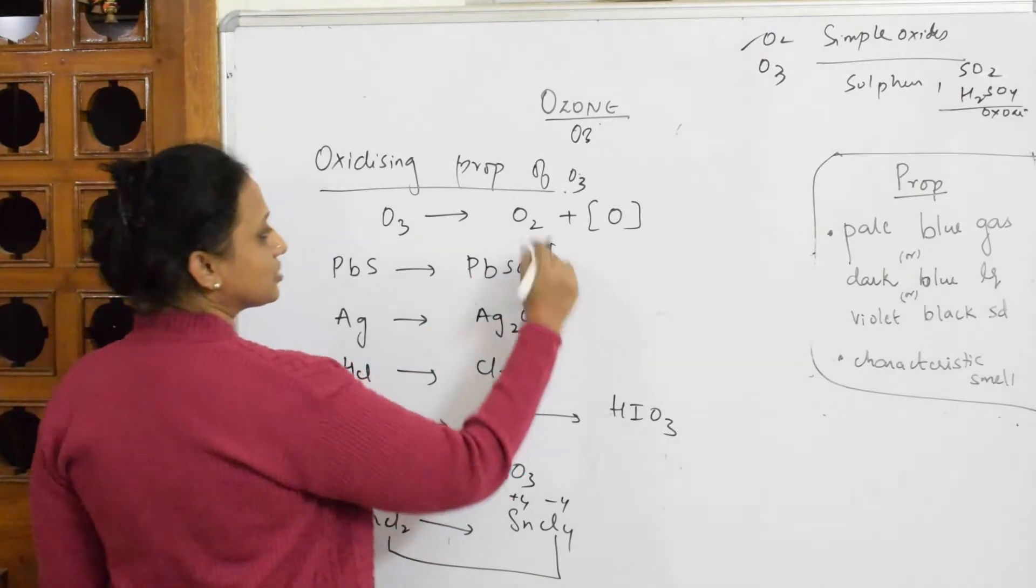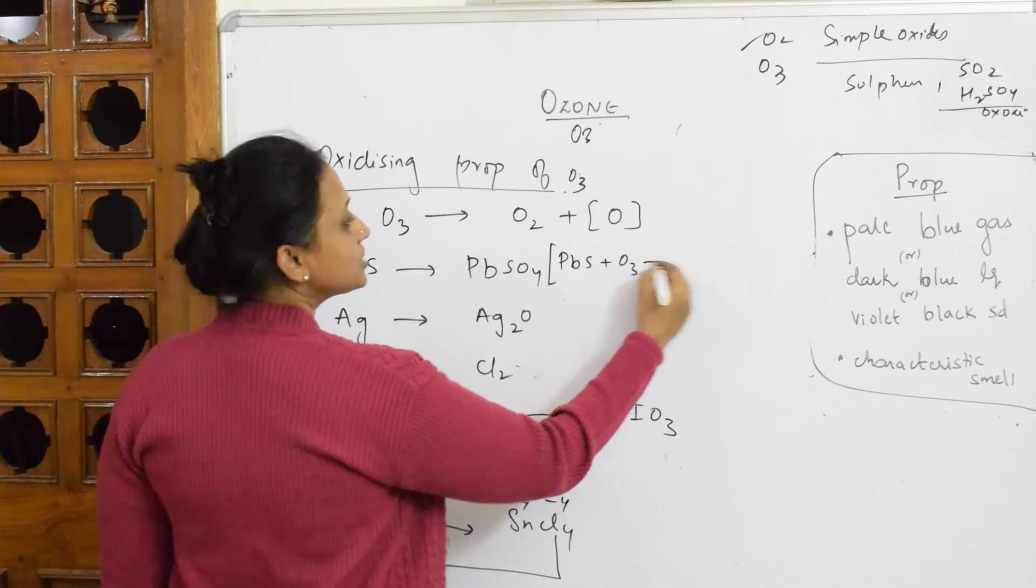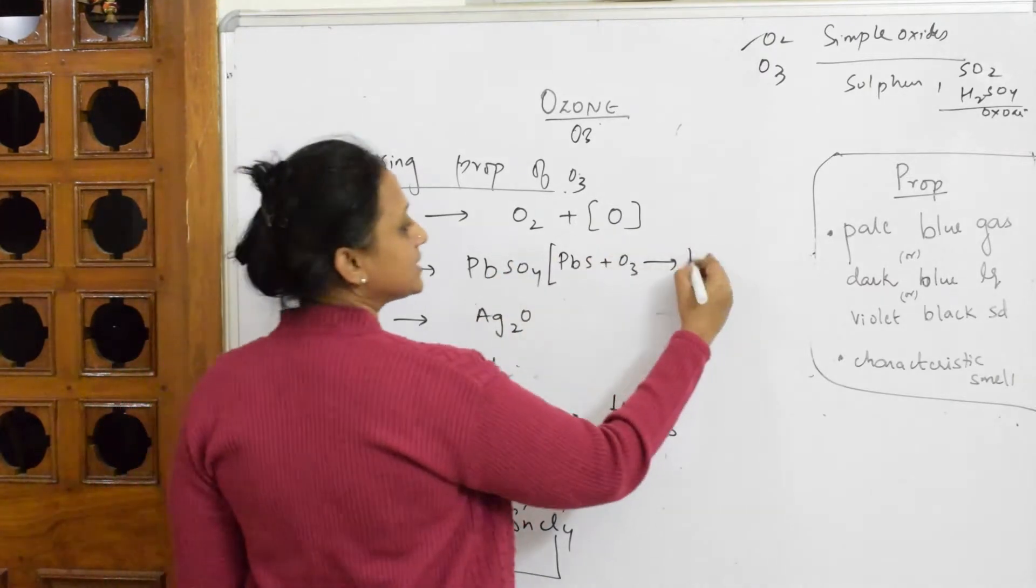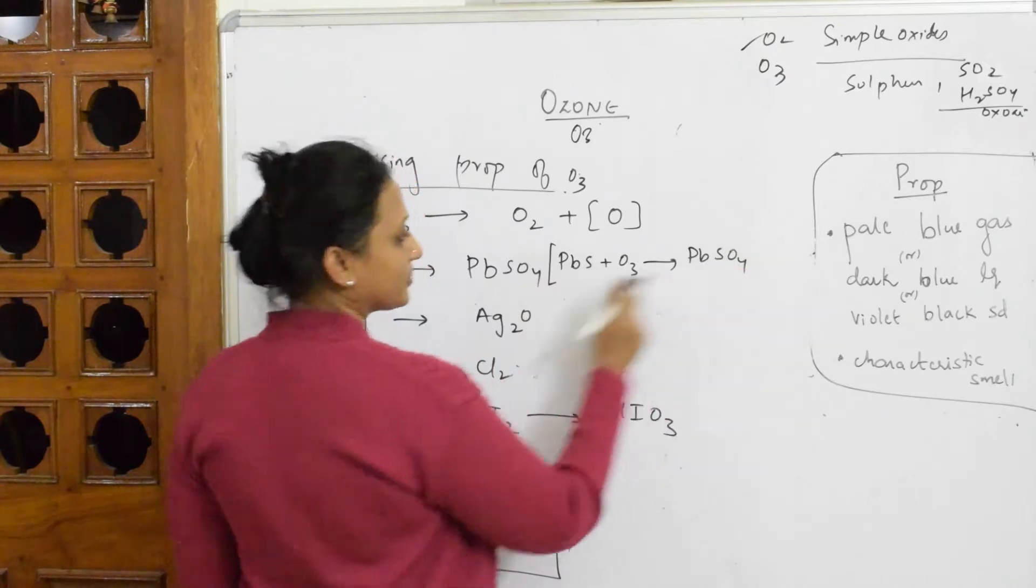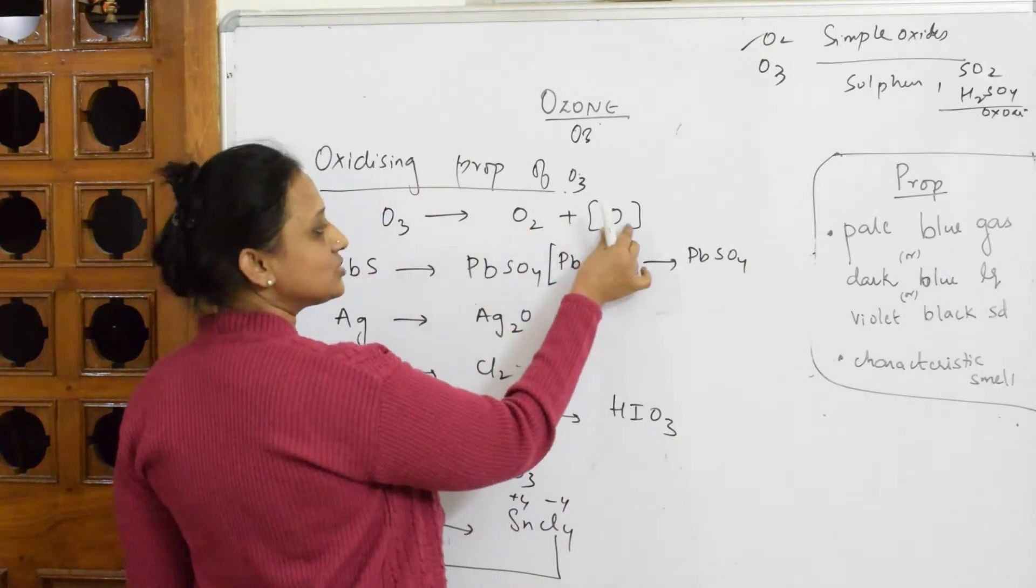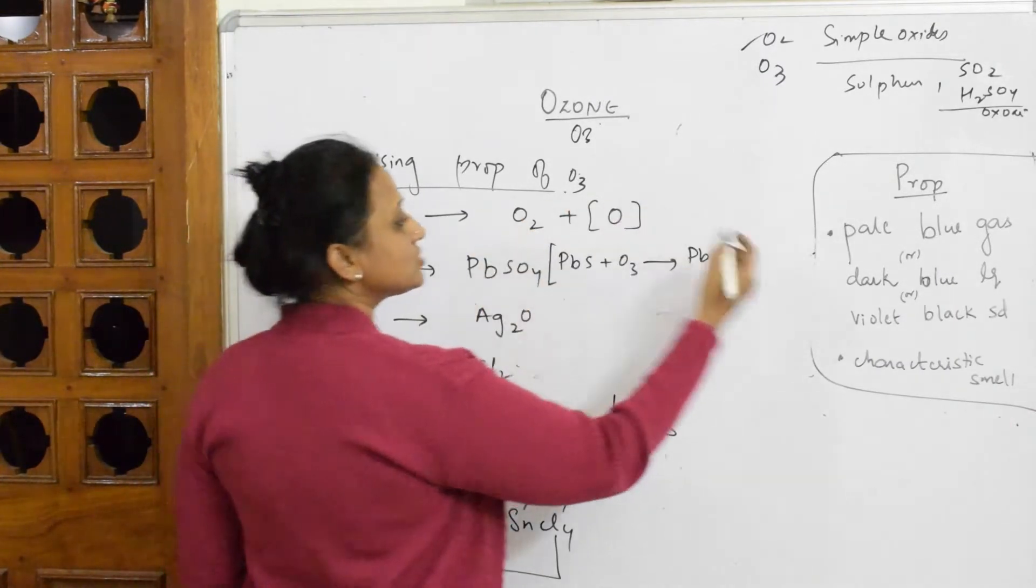How is it going to oxidize? PbS when it combines with ozone, it's going to get converted into lead sulfide to lead sulfate I said. PbSO4. Then ozone, it releases because that nascent oxygen has done its oxidizing nature and the leftover is oxygen isn't it?